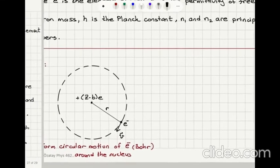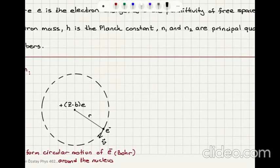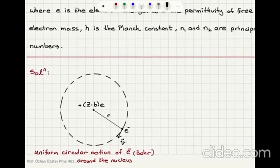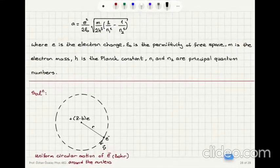In the Bohr atom model, we have the electron orbiting around the nucleus in uniform circular motion. In this case, the net positive charge in the nucleus will be (Z minus b) times e, where e is the electron charge. So we have the electron orbiting around this charge (Z minus b)e in a circle with radius r and tangential velocity v.